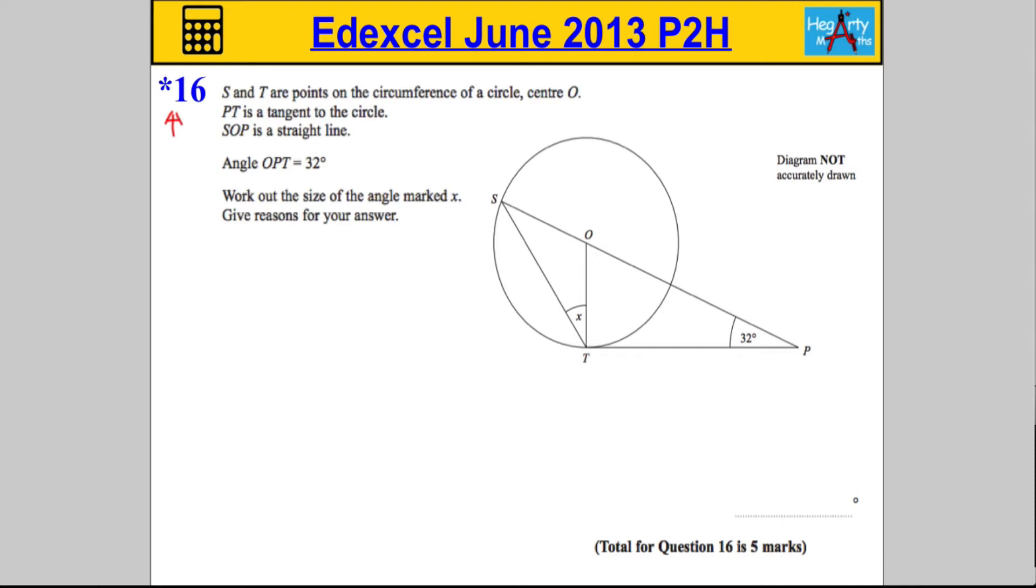PT is a tangent - that word is very important in this particular question. It's a tangent to the circle, and it says SOP is a straight line. The angle OPT is 32 degrees, and we're asked to work out the size of the angle marked x and give reasons for our answer.